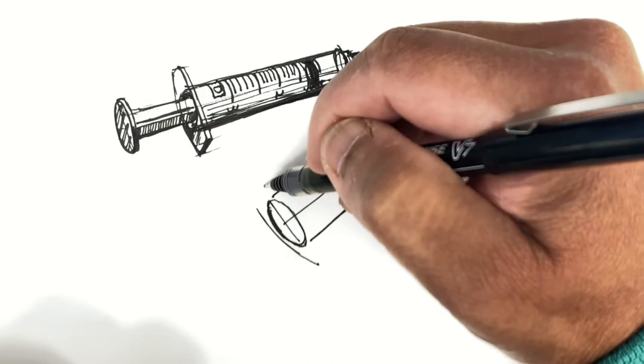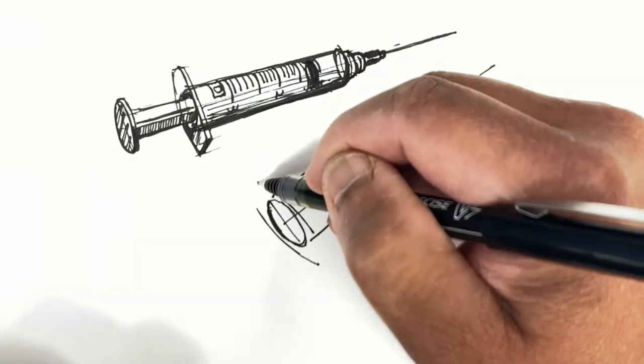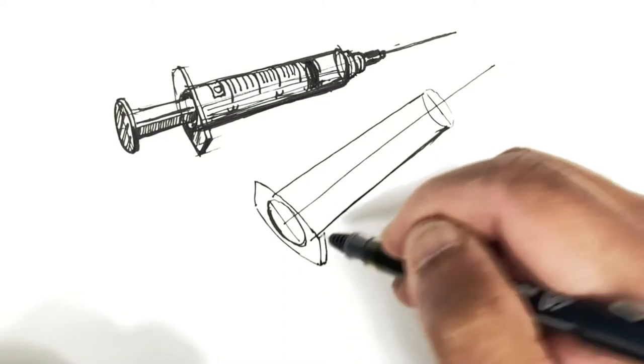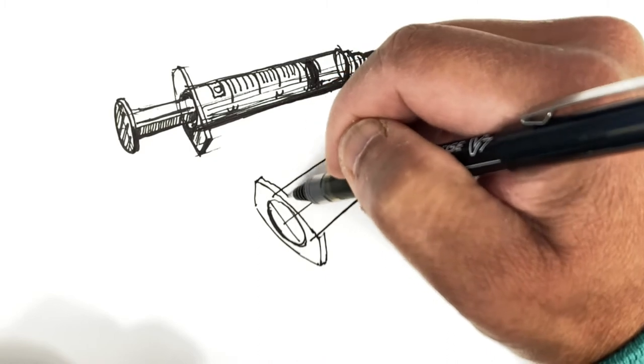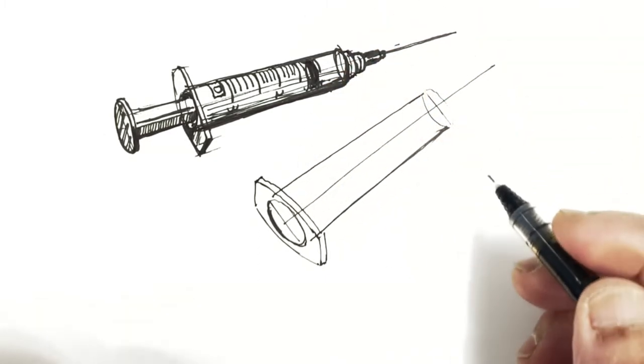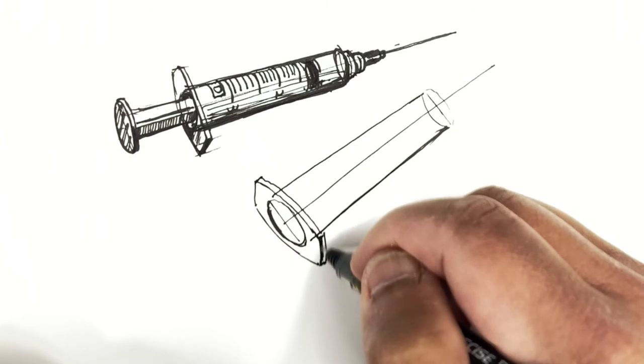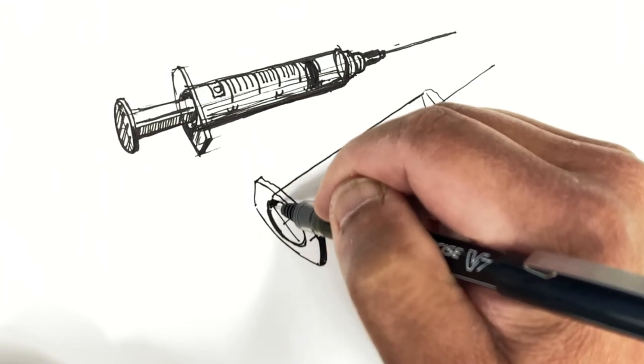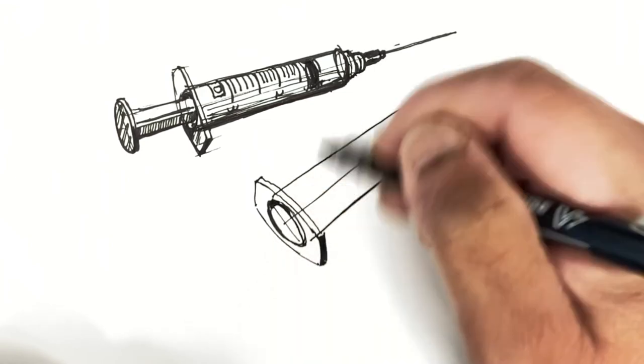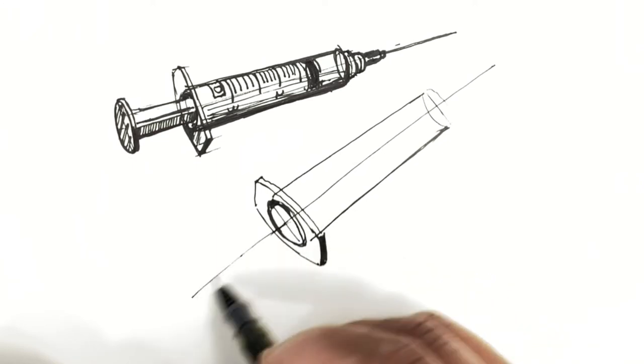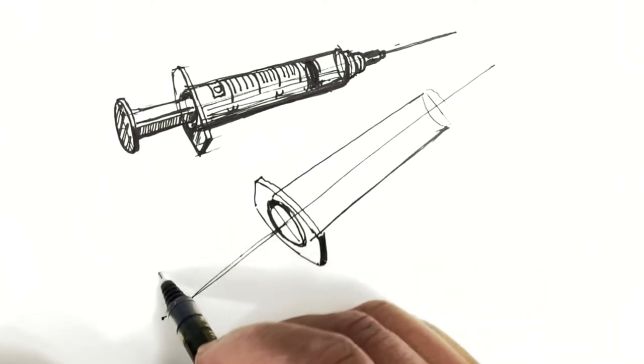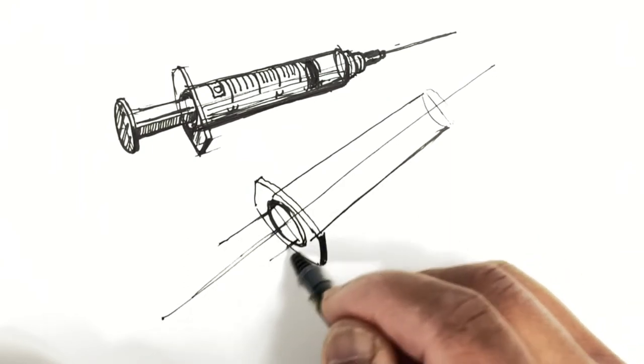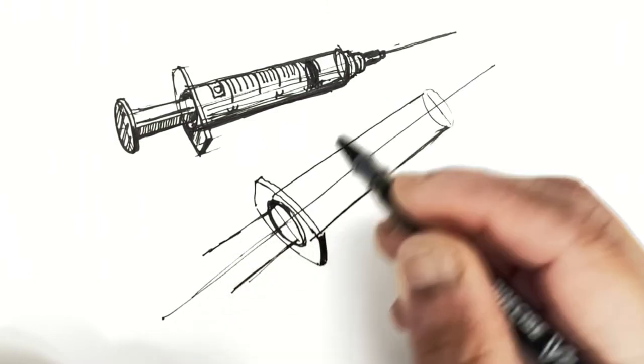Again we'll draw in the barrel flange. It's just a slight curve on either side of the oval. Draw the ends and I'll shadow this part right here. I'll start working on the inside plunger, continuing on the center line.